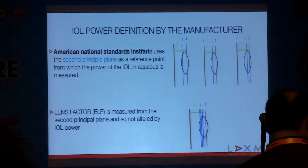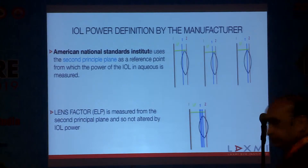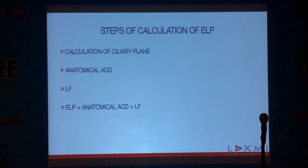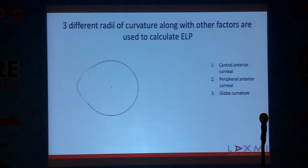The IOL power definition by the manufacturer, according to the American National Standard Institute, uses the second principal plane as a reference point from which the power of the IOL in aqueous is measured. The lens factor used for ELP calculation is measured from the second principal plane, and hence it is not altered by IOL power when Barrett's formula is used. The steps of ELP calculation by Barrett's formula are: first, determine the ciliary plane; then calculate anatomical anterior chamber depth; then lens factor; and finally, effective lens position.